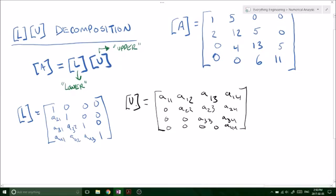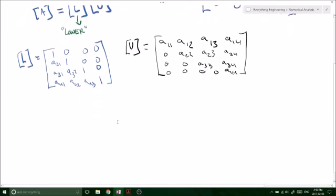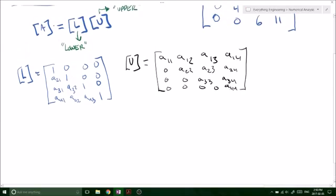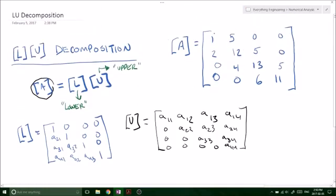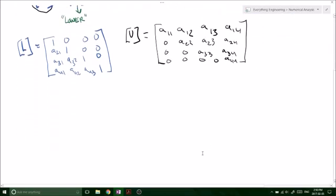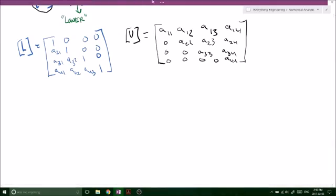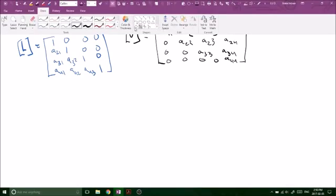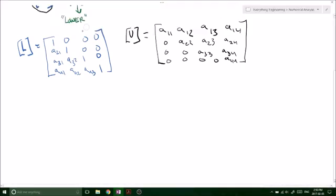And now the product of these two matrices has to equal our original given matrix A. And the given matrix A is up here. We have 1-5-0-0-2-12-5-0-0-4-13-5-0-0-6-11. So this was actually an example, a question from a past midterm. So it's kind of tricky but it's actually easy if you understand the process.